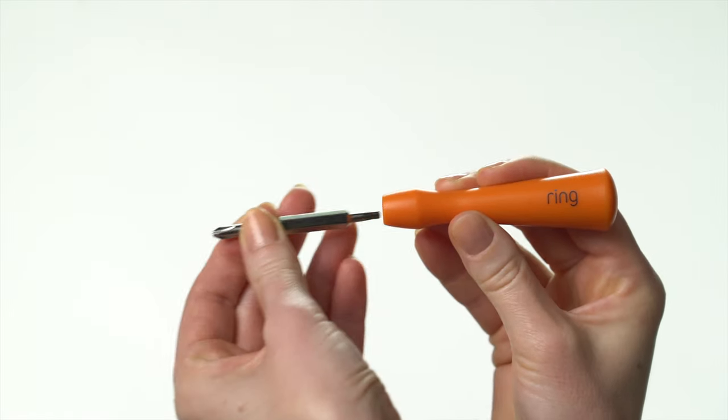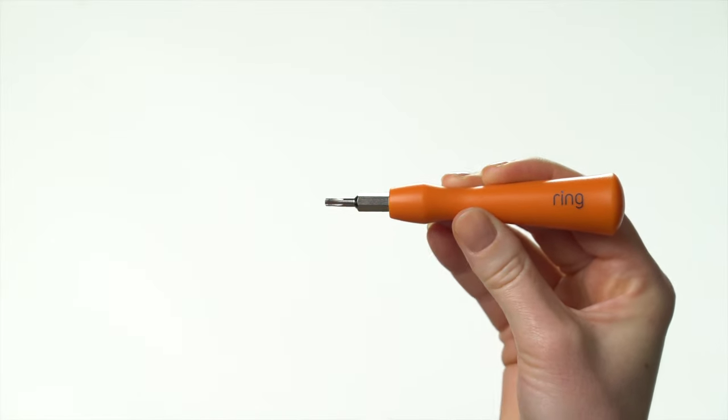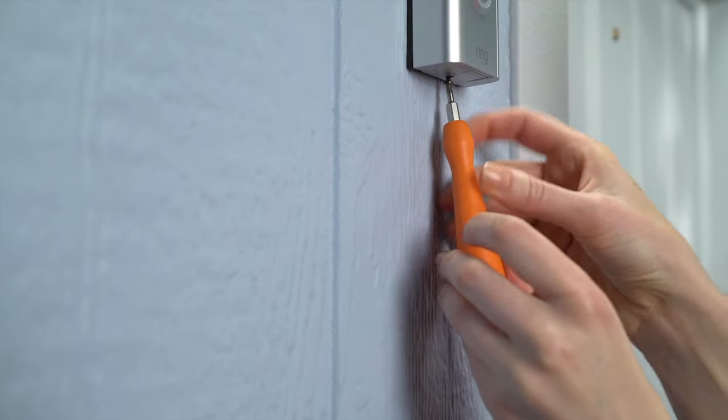Switch the included screwdriver bit to the star-shaped end. Then use it to remove the security screw on the bottom of your video doorbell.